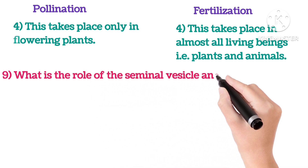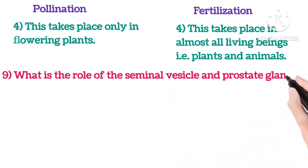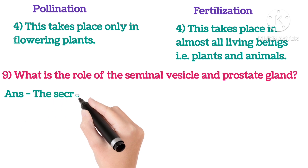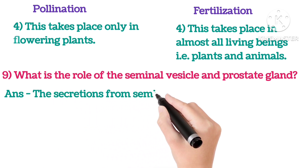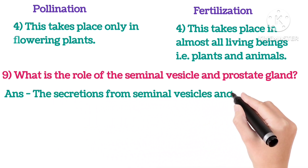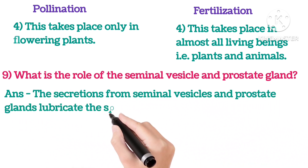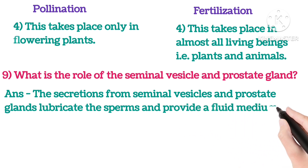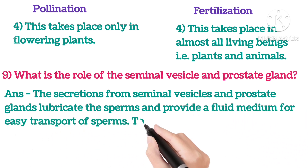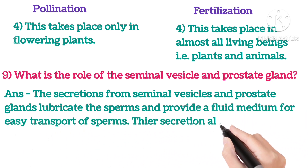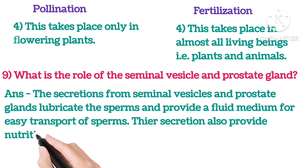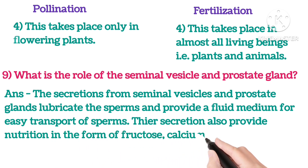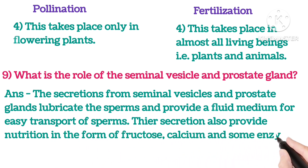Ninth: What is the role of the seminal vesicle and prostate gland? The secretions from the seminal vesicle and prostate gland lubricate the sperm and provide a fluid medium for easy transport of sperms. The secretion also provides nutrition in the form of fructose, calcium, and some enzymes.